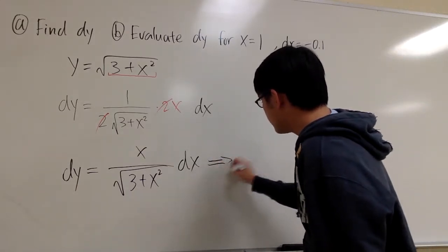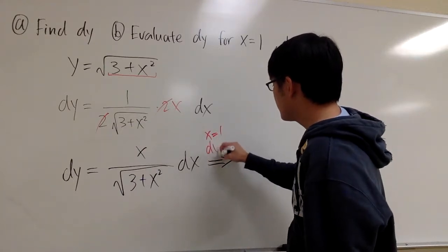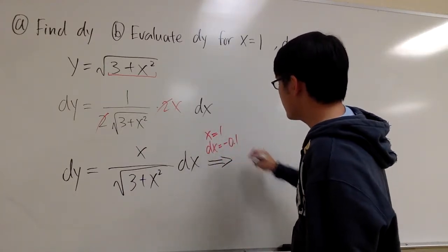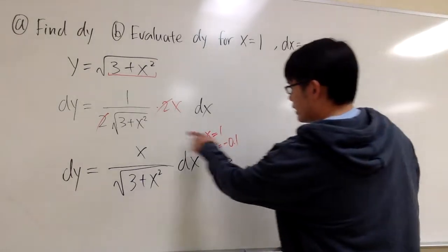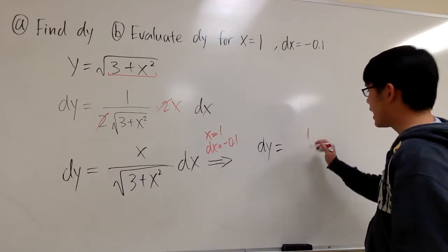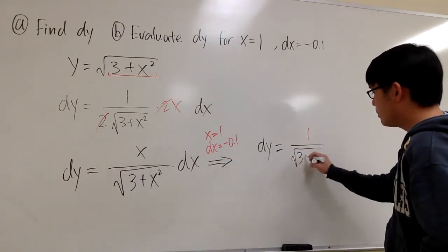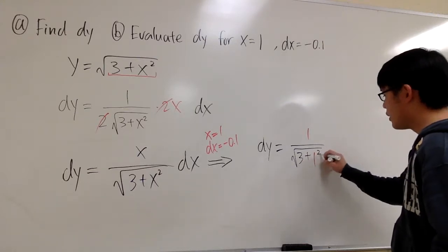So this right here, I'll just write the numbers. x equals 1 and dx equals negative 0.1. So plugging 1 into the top, that will give us dy equals 1 on the top over square root of 3 plus 1 squared on the bottom.